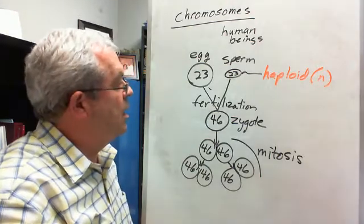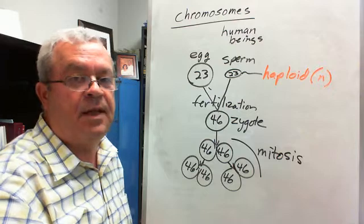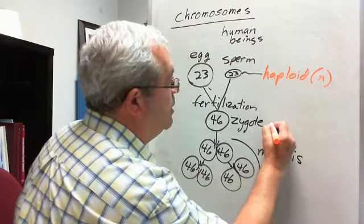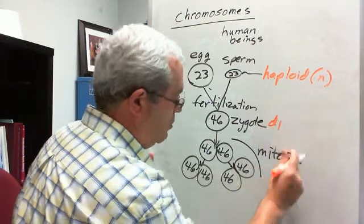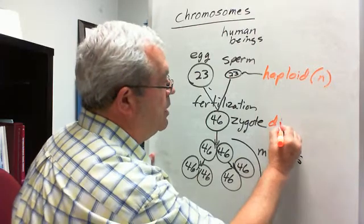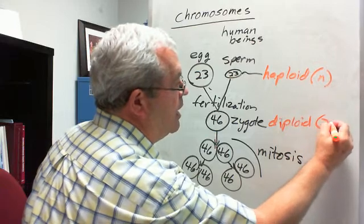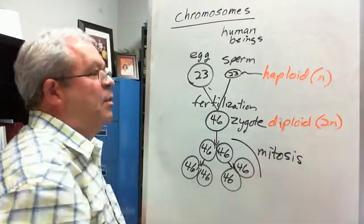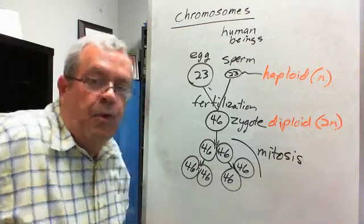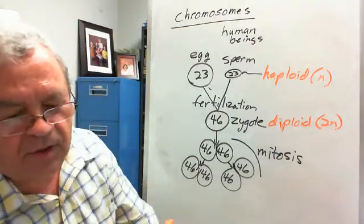Also, in every sexually reproducing organism, there is the double number, which is called the diploid number of chromosomes, d-i-p-l-o-i-d, and that is symbolized as the 2n number of chromosomes. The haploid and diploid number of chromosomes. And so now we can answer the rest of the questions in this section on our study guide.